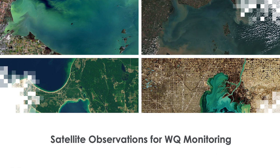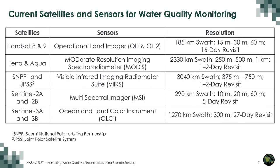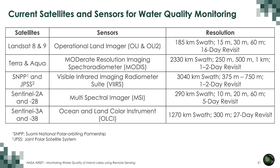Here is the current list of satellites and sensors for water quality monitoring, along with their spatial resolutions. The current Landsat satellites flying are Landsat 8 and 9. Landsat is a long-flying mission started in 1972. The sensor is the Operational Land Imager (OLI) and OLI-2 on Landsat 9. The swath width is 185 kilometers, pixel resolution is 15, 30, or 60 meters depending on the band, and the revisit time is 16 days — meaning every 16 days the satellite passes over a given location.